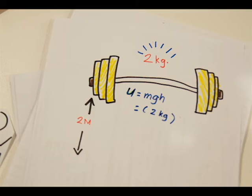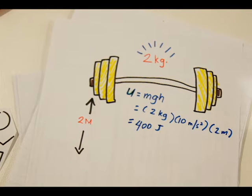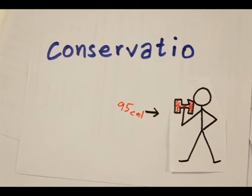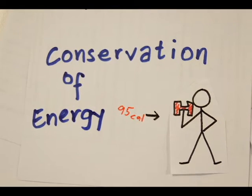Essentially, you need to give the barbell a potential energy of 95 calories or 400 joules to lift it. But the law of conservation of energy says that you have to get the energy from somewhere and not from nowhere. Where are you going to get that energy? You can get it from your body.